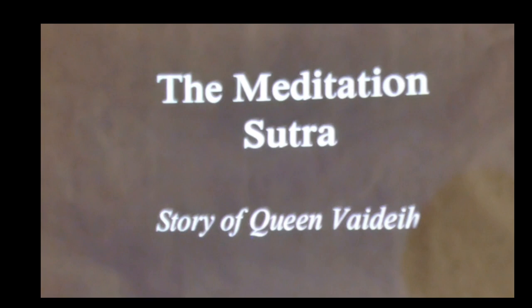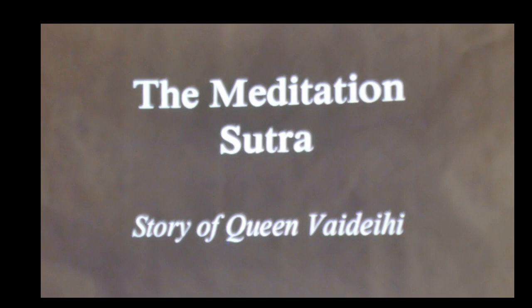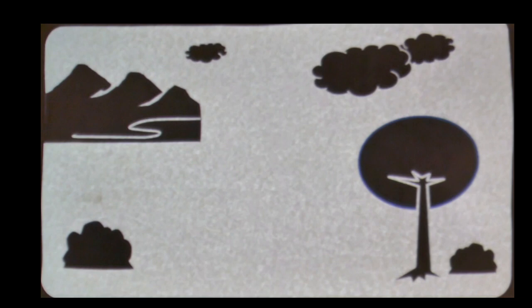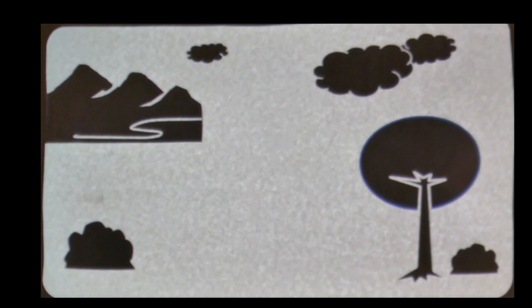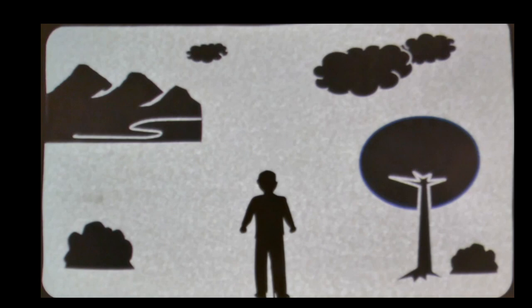So this is the Meditation Sutra, Story of Klingvai Deku. In the Kingdom of Magadha during the time of the Shakyamuni Buddha, his cousin and brother-in-law Devadatta looked up to Shakyamuni and desired to be a great religious leader like him.